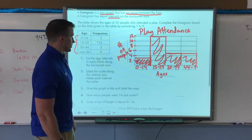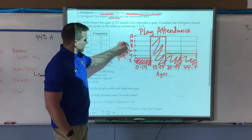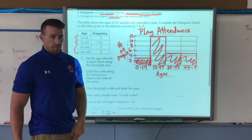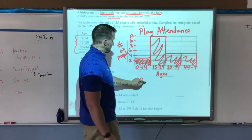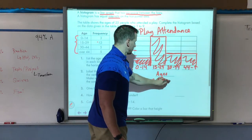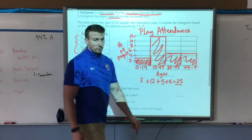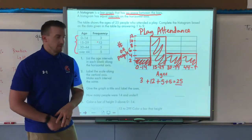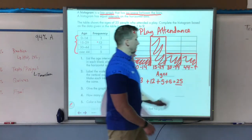Here's our histogram that we just created for play attendance. The ages were intervals, the number of people per interval. If I add three, 12, five, and five, that should give me my total attendance, which was 25. That means I didn't miss anybody. So that's how we create a histogram.